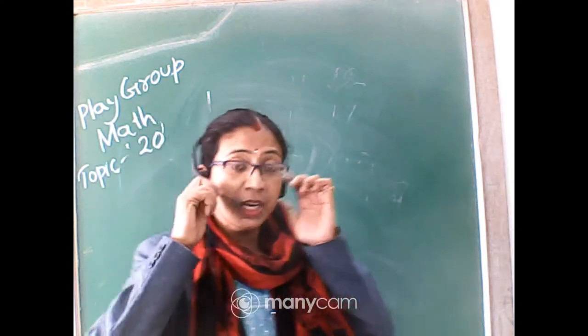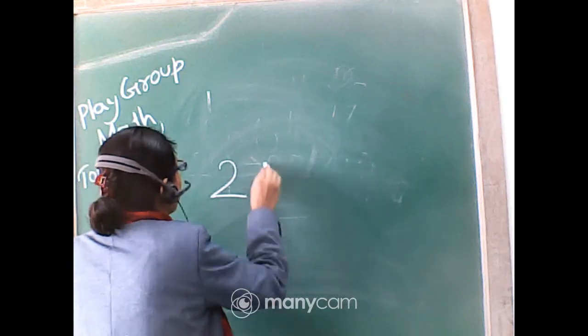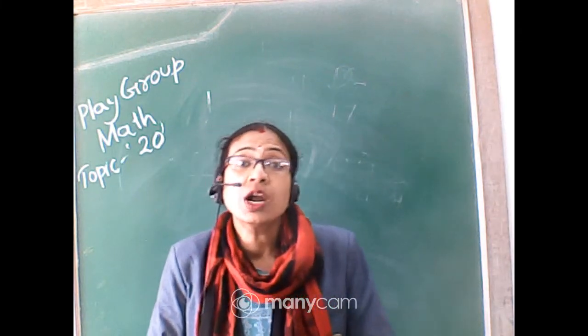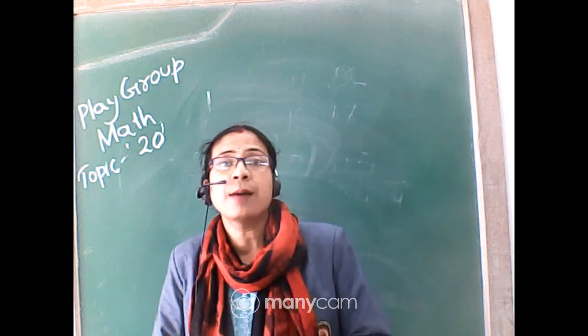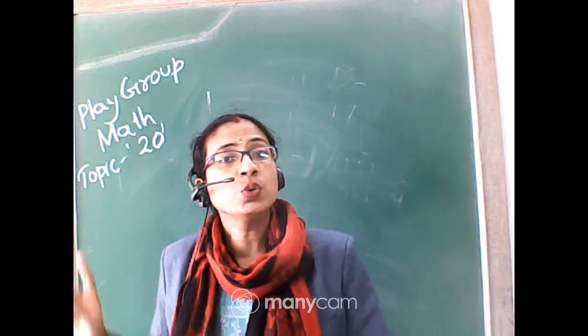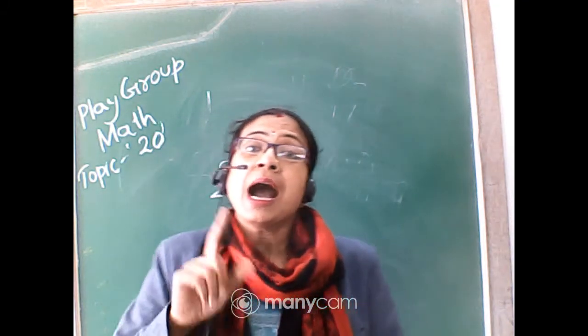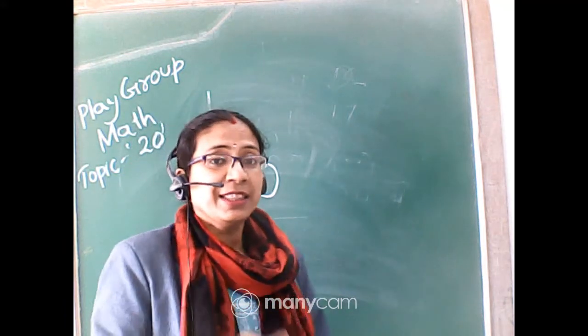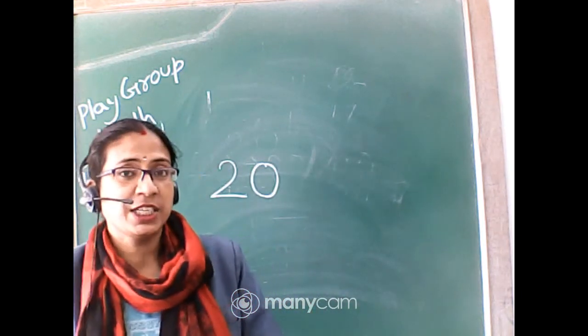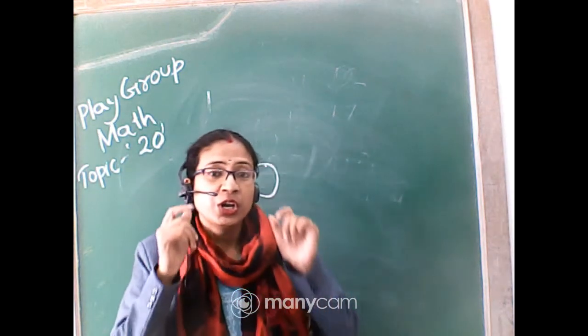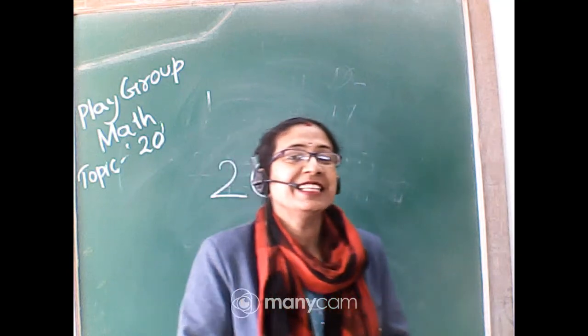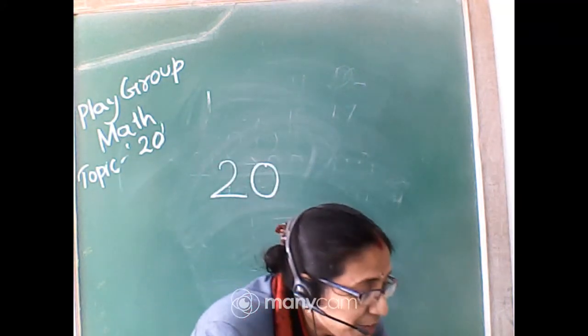So students, today we practiced 20, 20. You practice writing 20, 20 and also counting 20, 20 number of things. Take some colors, take some vegetables and count 20, up to 20. And one thing: you always practice writing 1 to 20 in order. Okay students? So today's math class up to this much. Hope we will find, and till now tata. Have a nice day for all of you.